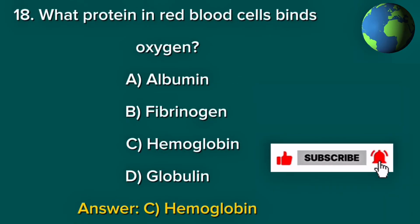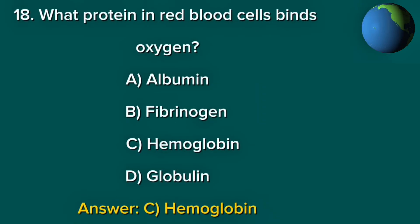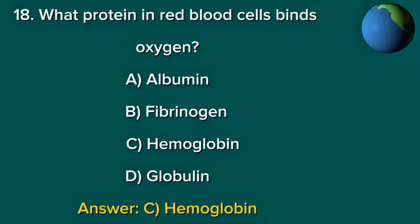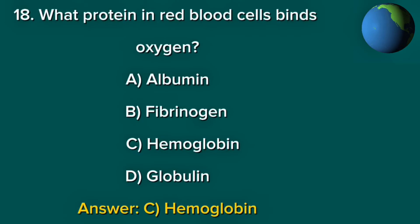Question 18. What protein in red blood cells binds oxygen? A. Albumin. B. Fibrinogen. C. Hemoglobin. D. Globulin. Answer: C. Hemoglobin.